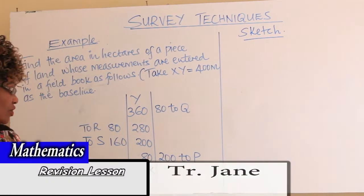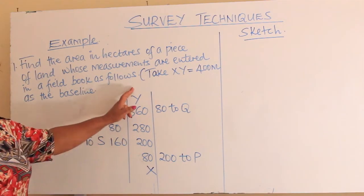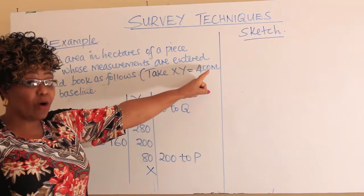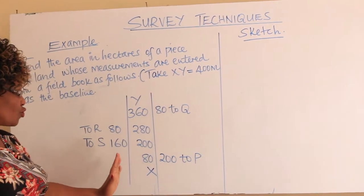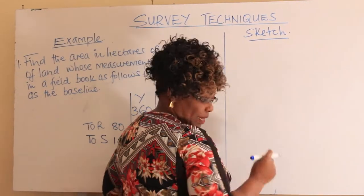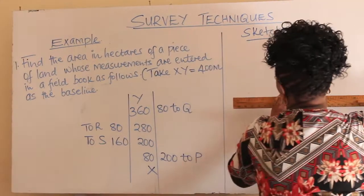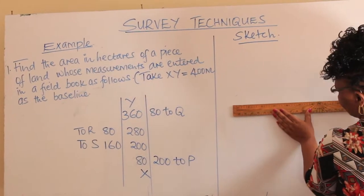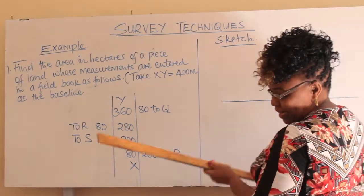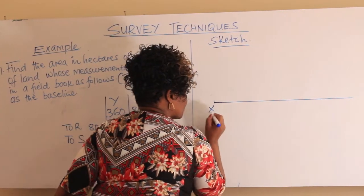How do you draw the sketch? You first draw the baseline from X to Y. Remember Y is at 400 meters. You draw it horizontally using a ruler. You draw the baseline horizontally like that, starting from X. Fix your X there.